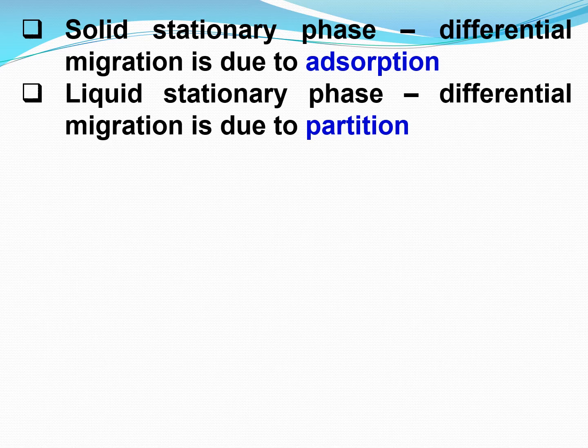If the stationary phase is a liquid, then differential migration occurs due to partition. Partition refers to what happens when you take a mixture of immiscible solvents — like water and benzene — and add a solute such as acetic acid. Acetic acid can dissolve in both water and benzene, so depending on its solubility, it distributes between the two solvents. Some dissolves in benzene and some in water. That distribution is called partitioning.